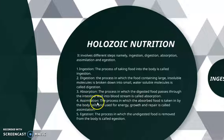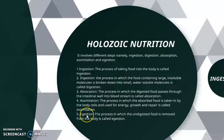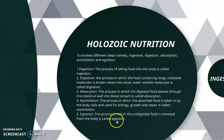Assimilation is the fourth step, which includes the uptake of nutrients and using those nutrients for the growth and repair of the body. The last step is ejection, where the undigested food — which cannot be stored in the body for a long time — is removed from the body.